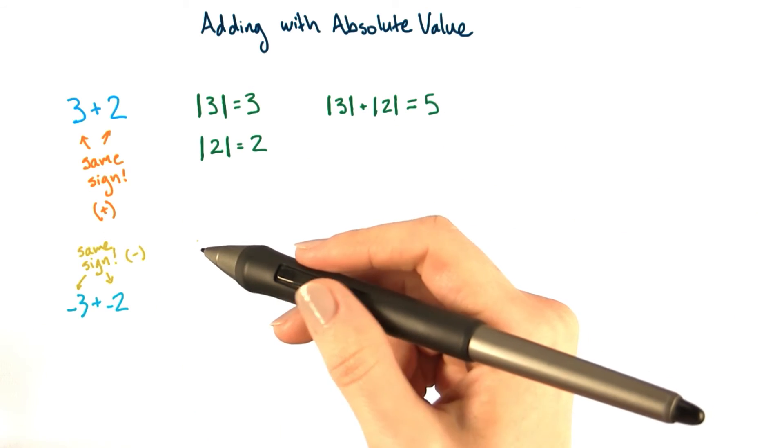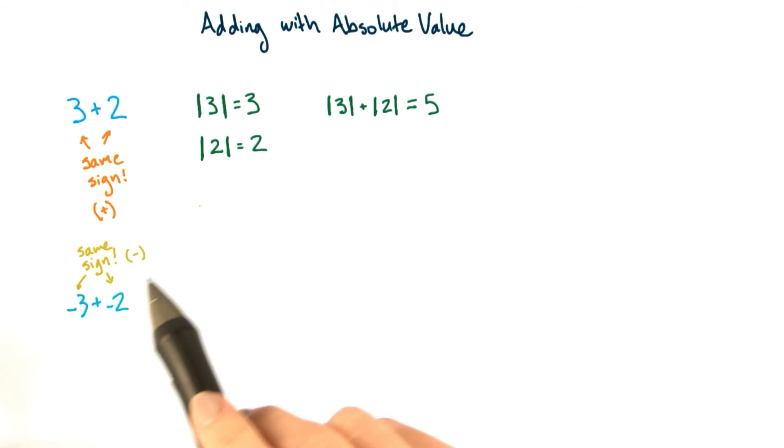Here's where things get interesting. In the case where we're adding negative 3 and negative 2, we can take advantage of the fact that negative 3 and negative 2 share the same sign. They're both negative. We can take the absolute value of each number and then add those absolute values.